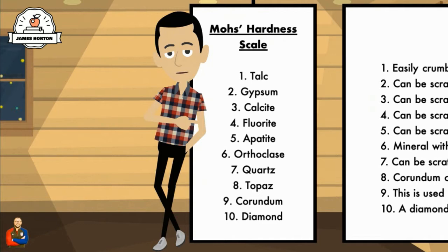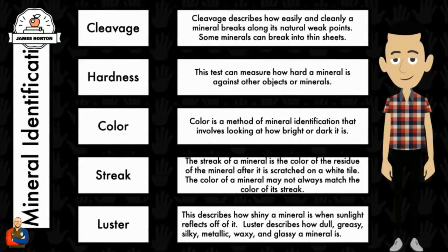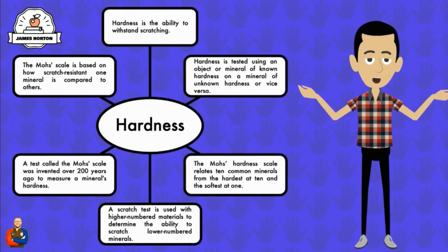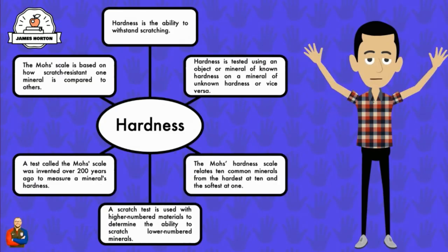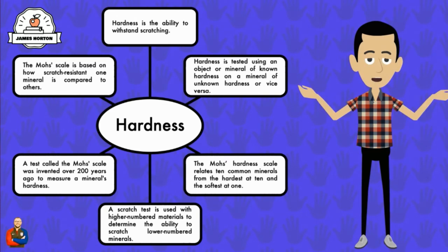I've heard all kinds of things about diamonds. Diamonds are incredibly valuable — we know that. Diamonds are a girl's best friend. But did you know that the diamond is the hardest mineral on Earth? It is identified on the Mohs scale of hardness with a number 10.